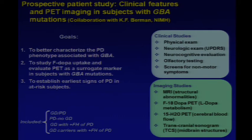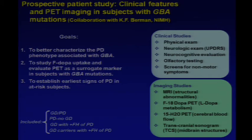We recruit patients with both Gaucher disease and Parkinson disease, controls with Parkinson disease alone, and patients with Gaucher disease without Parkinson disease but with a family history in a parent or sibling, as well as carriers with strong family history. Patients undergo physical and neurologic examination, neurocognitive assessment, scratch-and-sniff olfactory testing, multiple non-motor symptom surveys, MRI for structural abnormalities, fluorodopa PET scanning, water studies for cerebral blood flow patterns, and transcranial ultrasonography of midbrain structures.